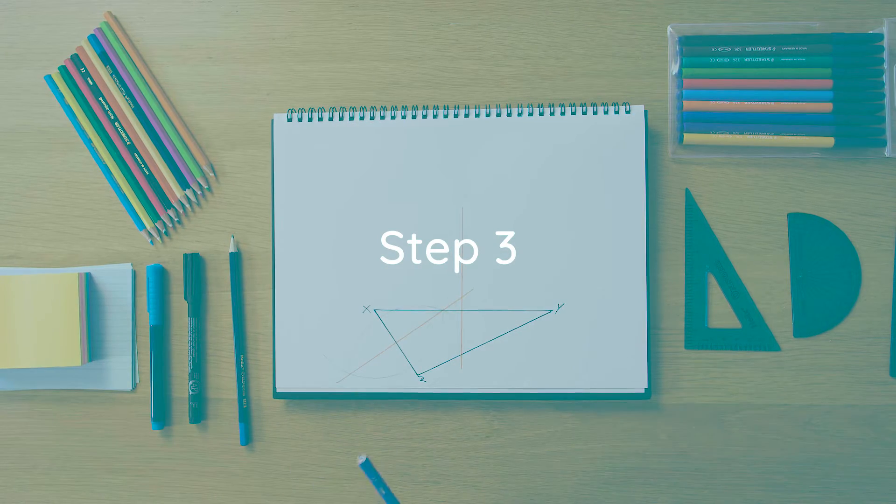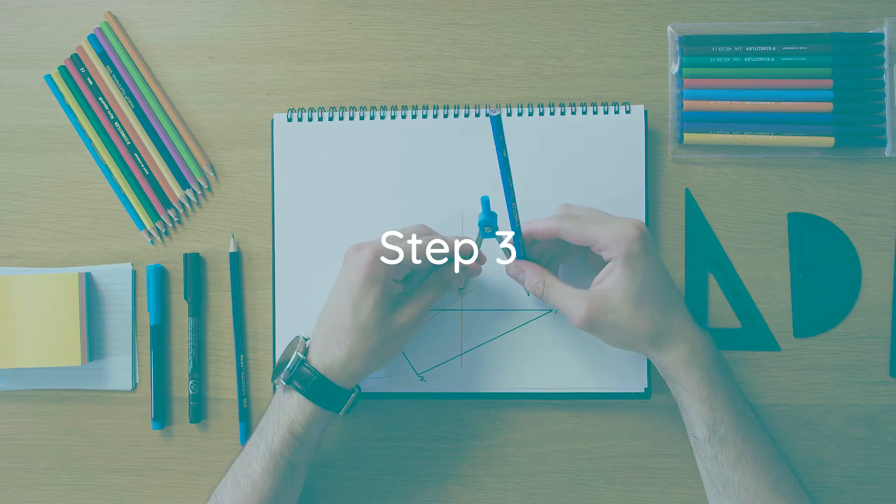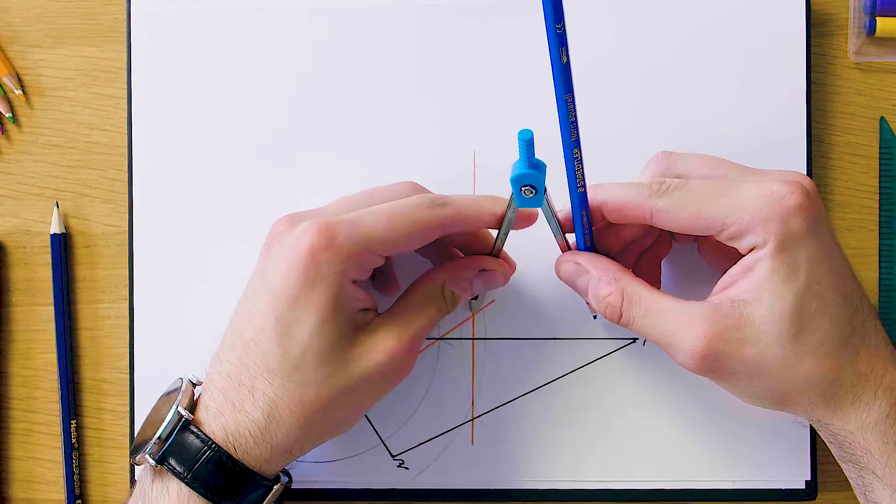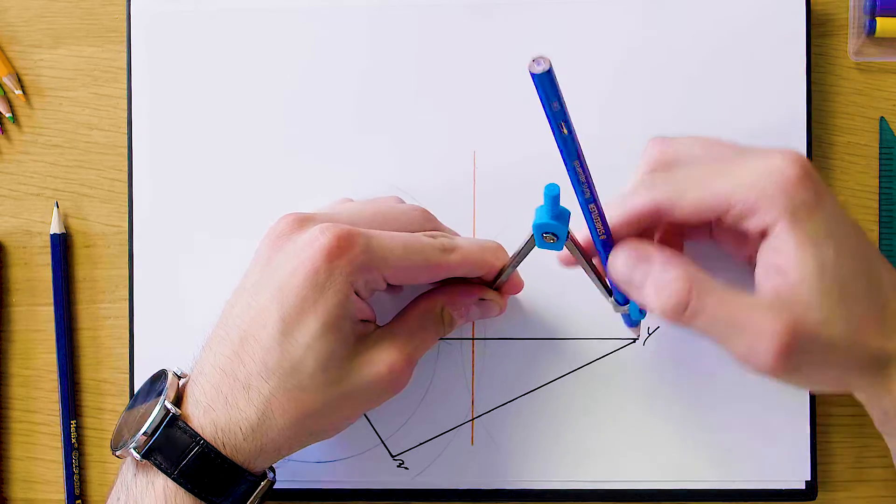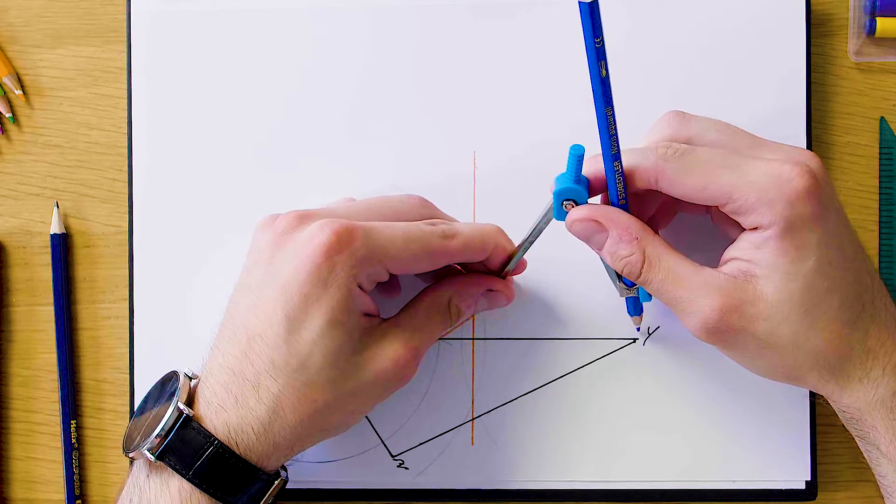Okay, so our third and final step here is just going to be to draw the circumcircle now itself. So we're just going to center it on that point of overlapping the orange lines and make sure it goes through each of the vertices. So it goes through y, it should go through x and z as well.